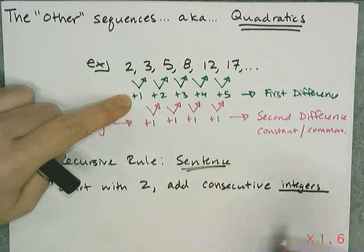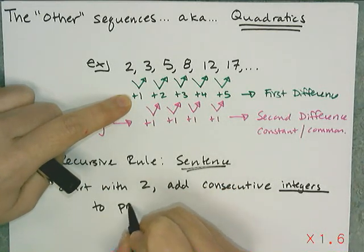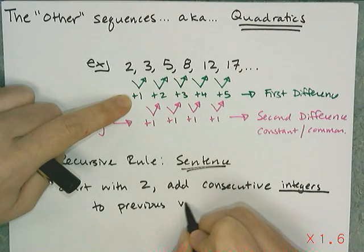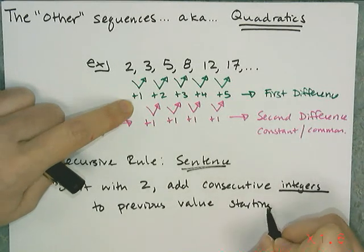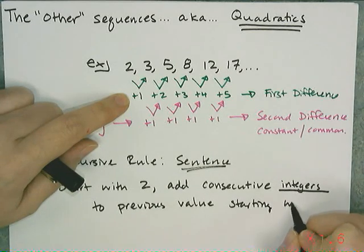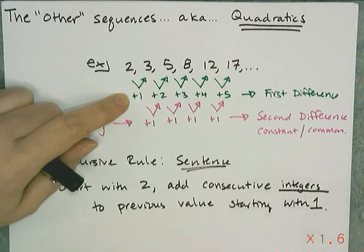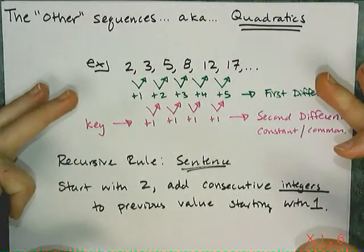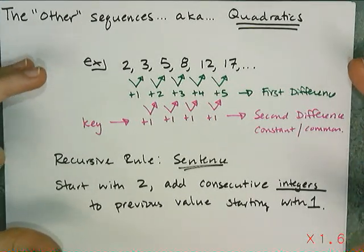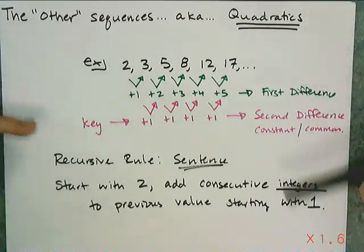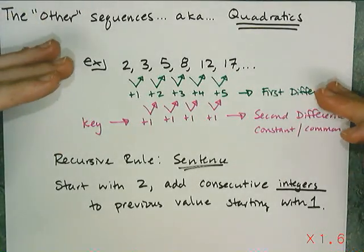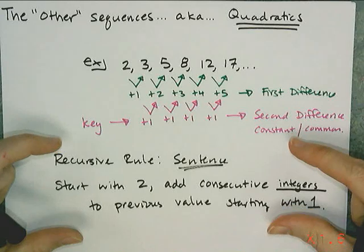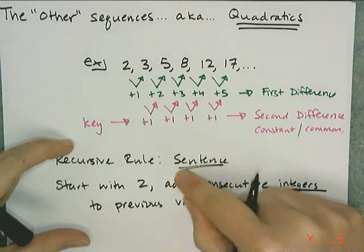So, add consecutive integers to the previous value, starting with, and you have to add this, because you need to tell me what first number you're adding. And in this case, I'm adding 1. And this is basically all I'm going to expect from you, like on a quiz right now, when I give you a quadratic sequence. I want you to tell me that it's one of these other, or these quadratics, meaning it's not arithmetic or geometric. And I want you to write me a recursive rule in sentence format.